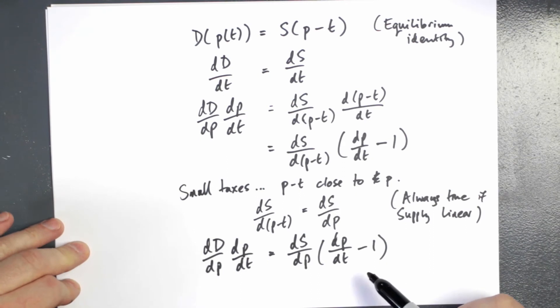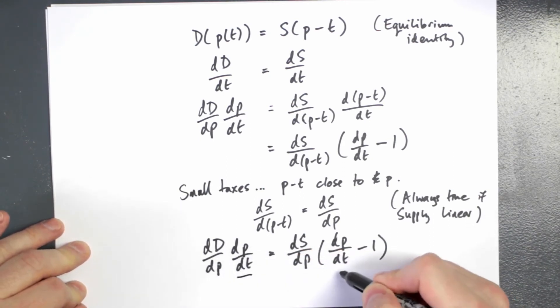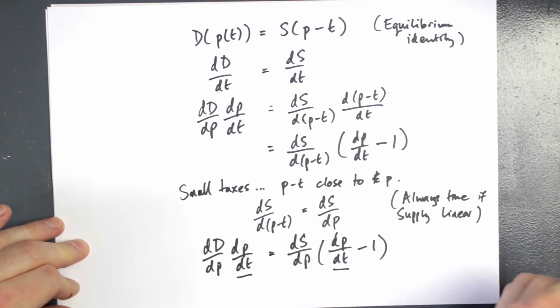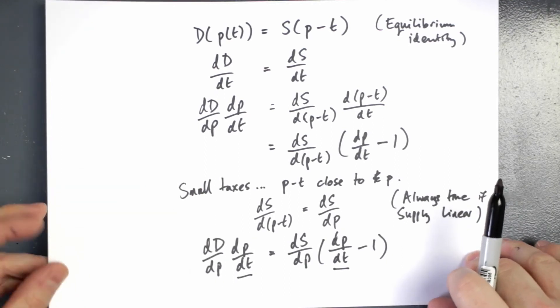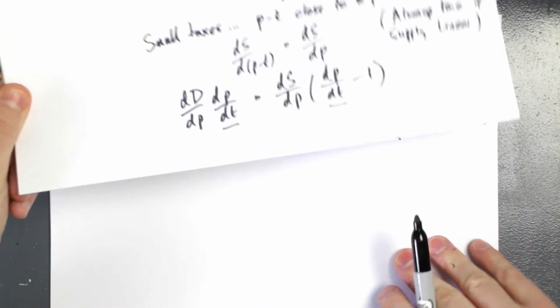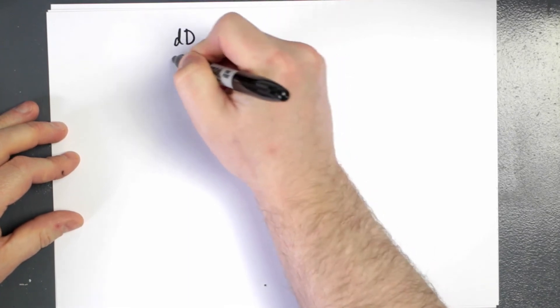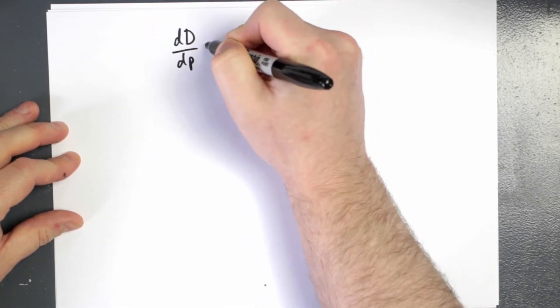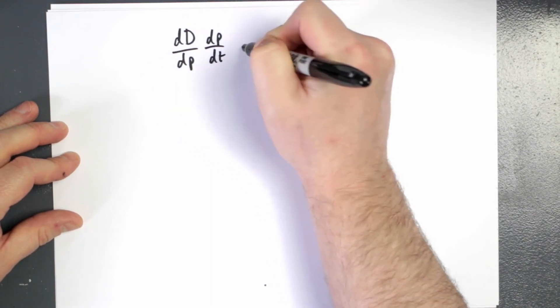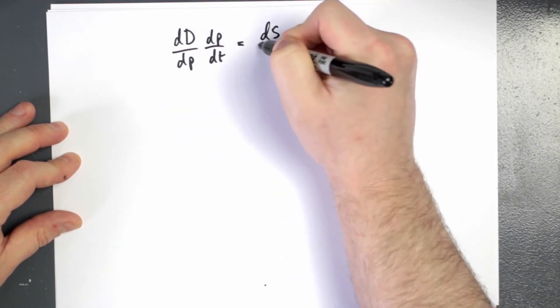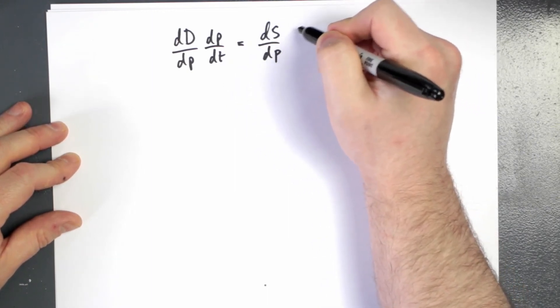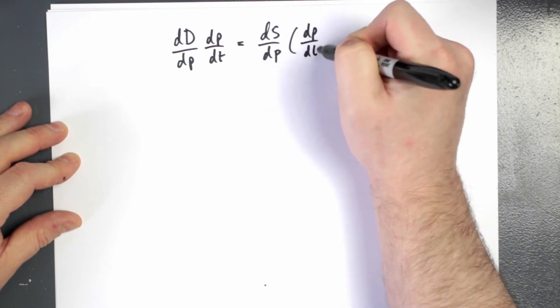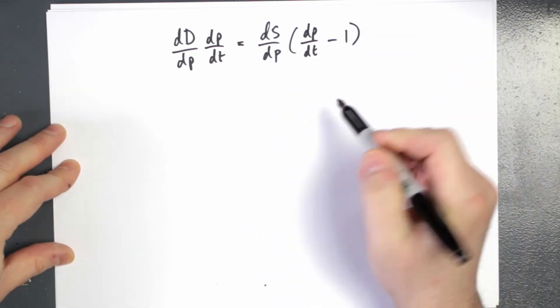So from here, what we want to do is essentially get this derivative of the equilibrium price with respect to the tax rate. We want to get that by itself. So if we do some rearranging, let me just rewrite where we're up to: the derivative of demand with respect to price multiplied by the derivative of price with respect to tax is equal to approximately the first derivative of the supply function with respect to the price multiplied by derivative of the equilibrium price with respect to tax minus one.